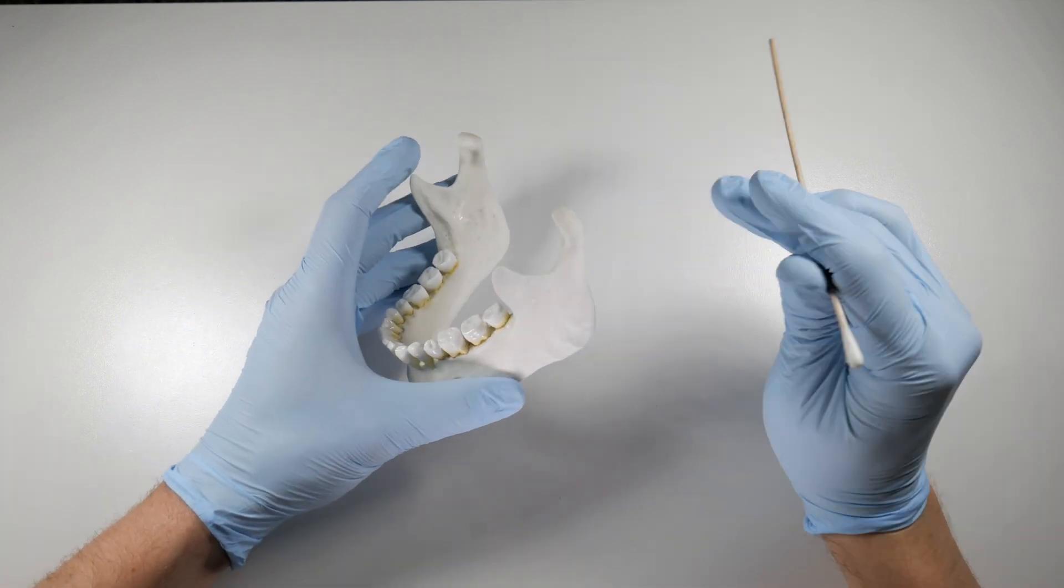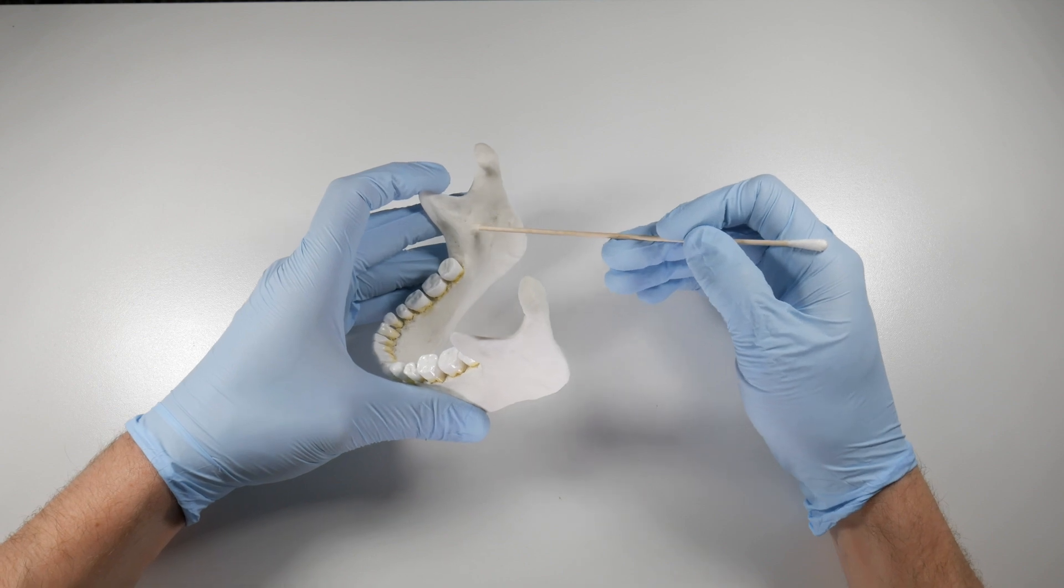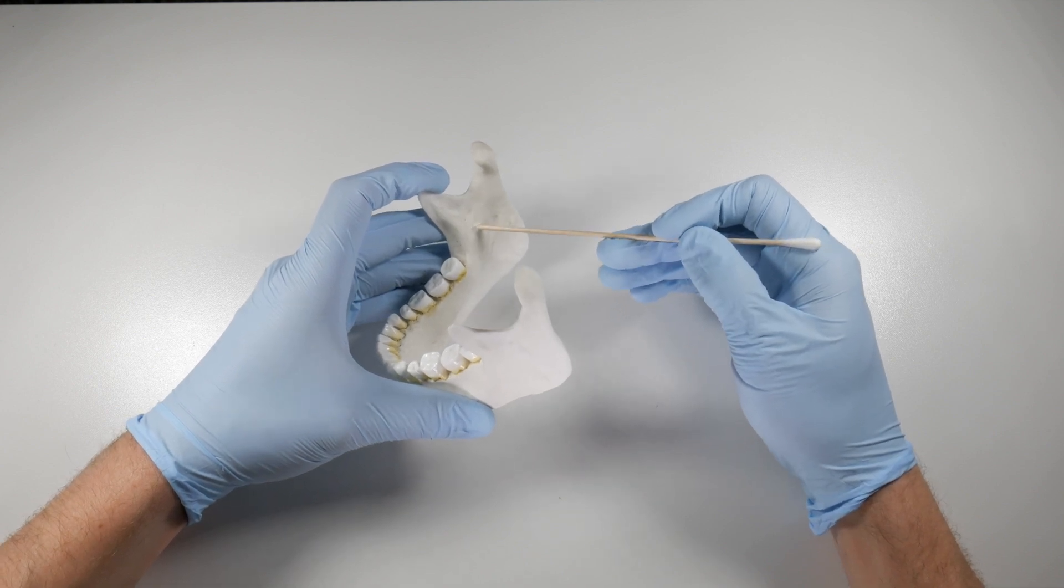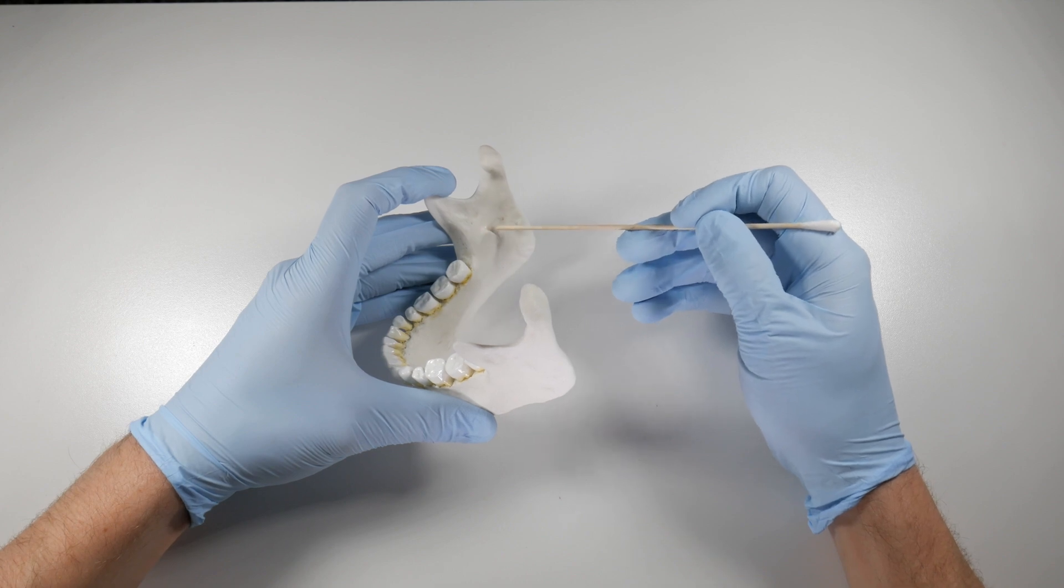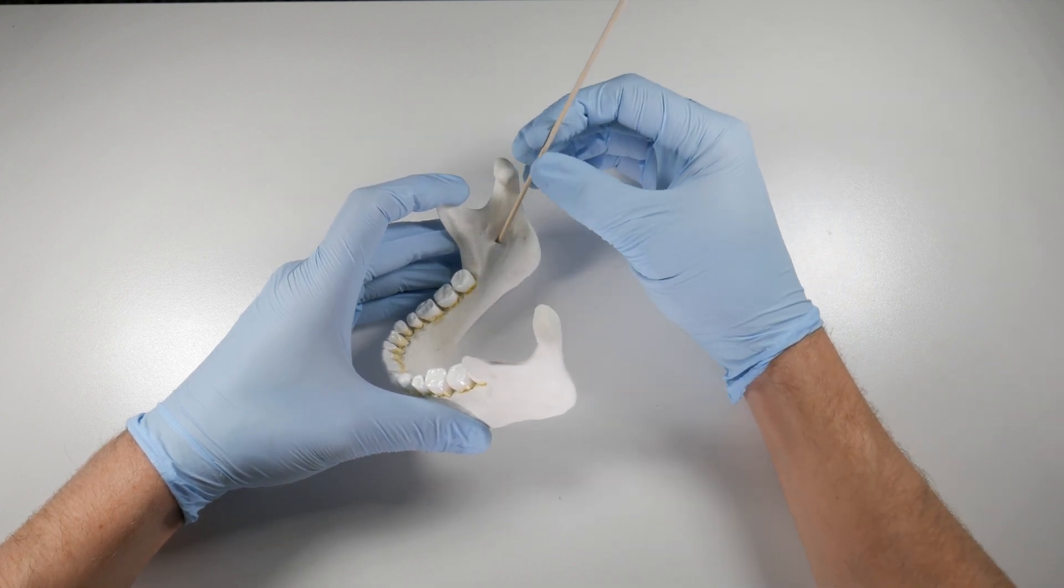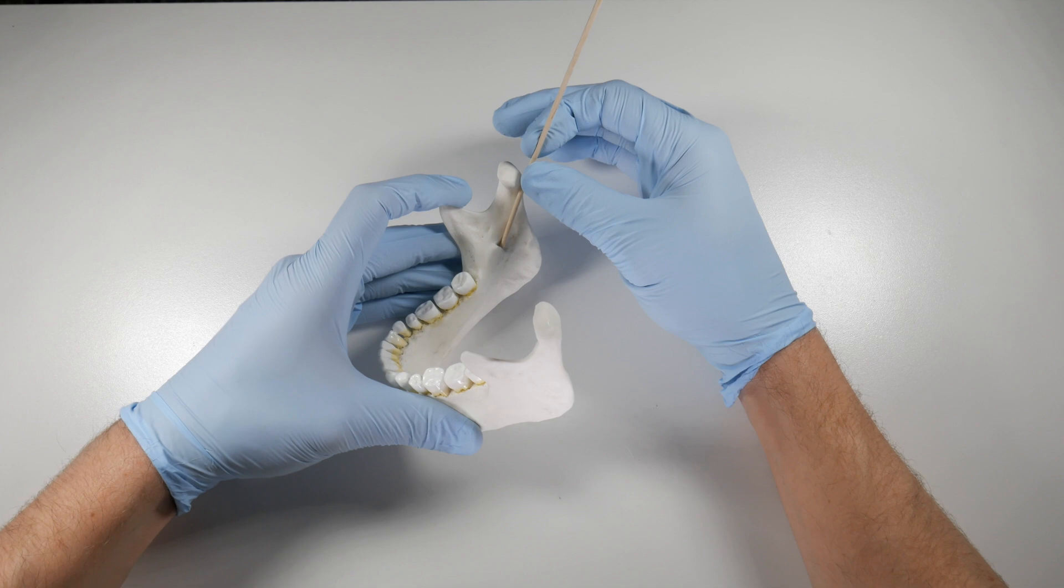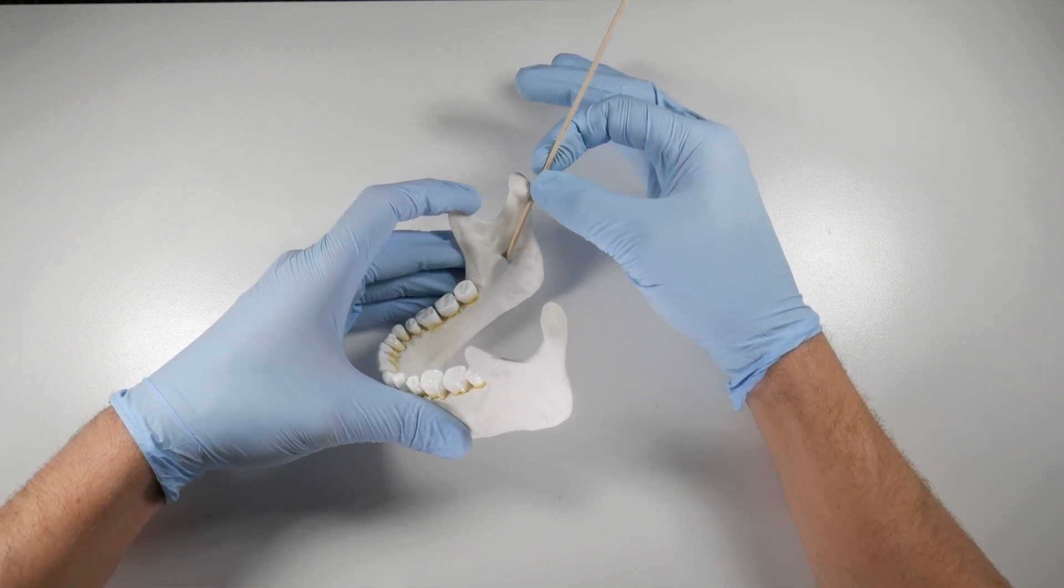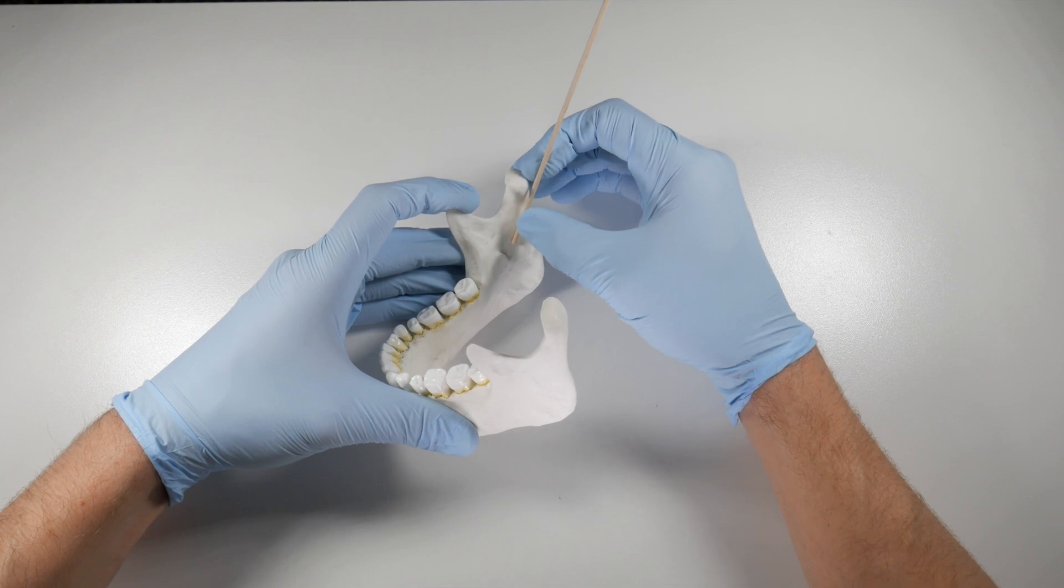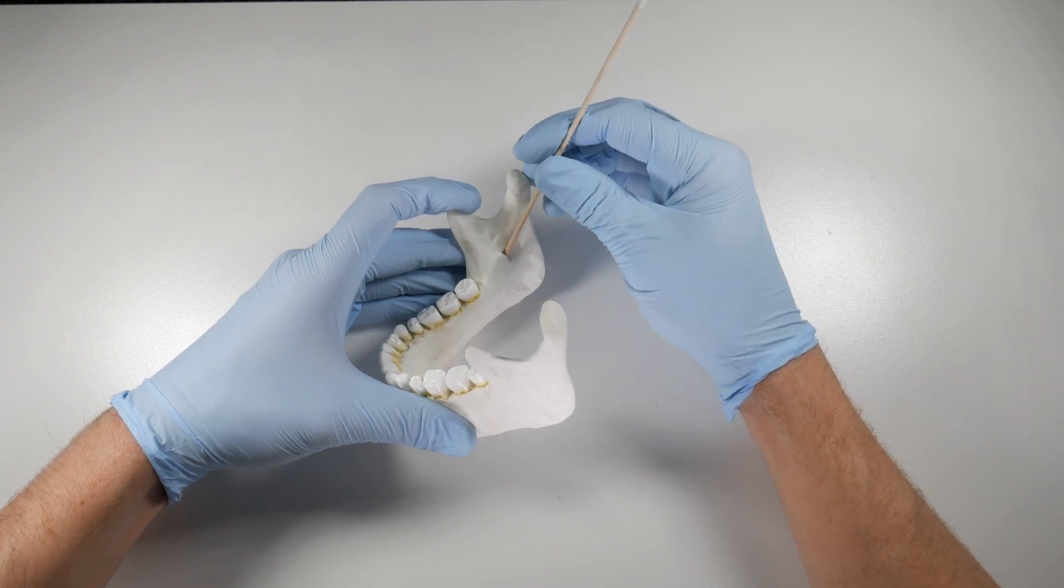First thing that we're going to look at is the location of the lingula. The lingula is a bony projection on the medial surface of the ramus and it's right over the opening of the mandibular foramen. The mandibular foramen is where the inferior alveolar nerve enters the jaw bone. Before this point the nerve is basically out in the open.